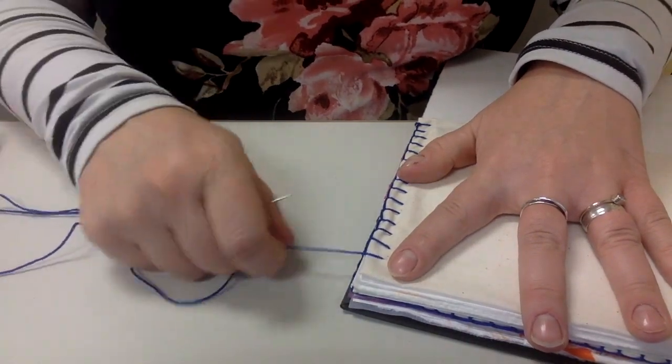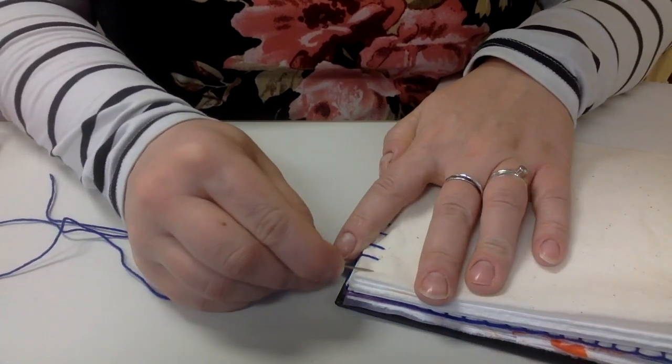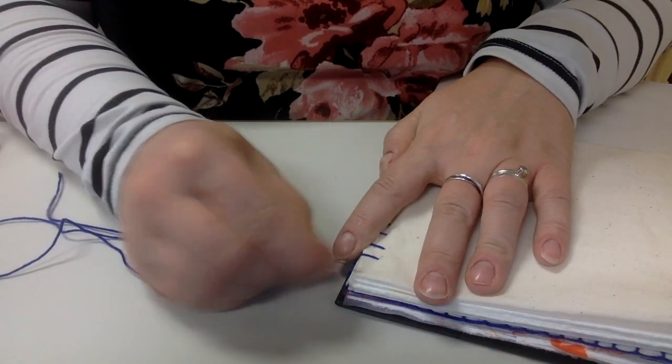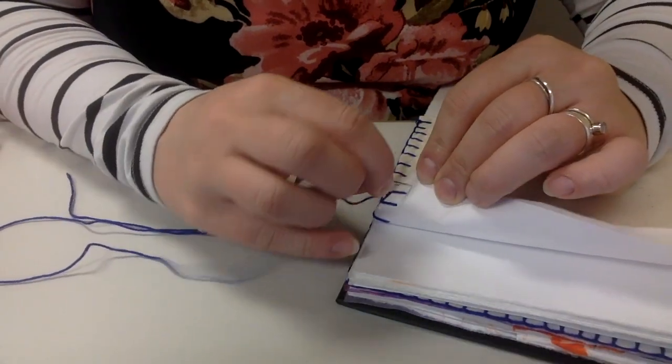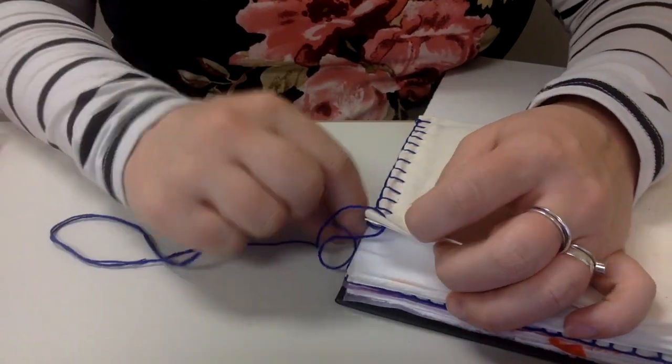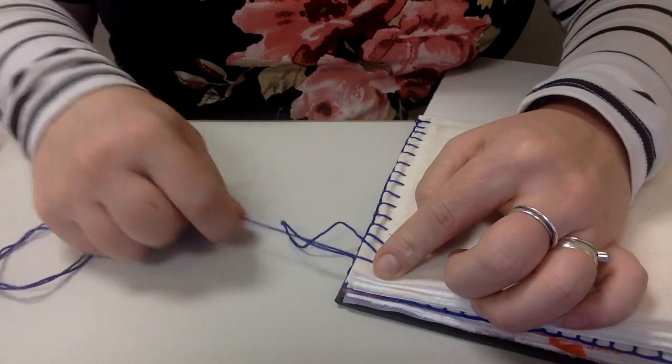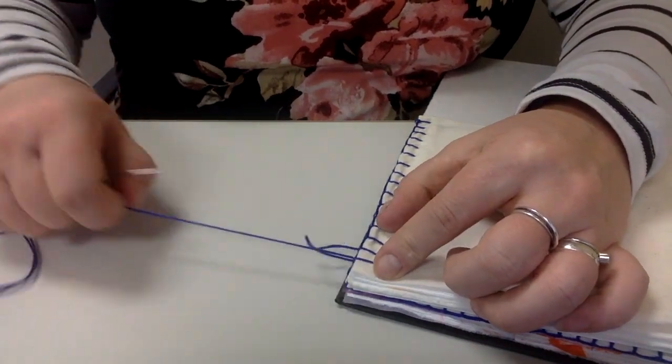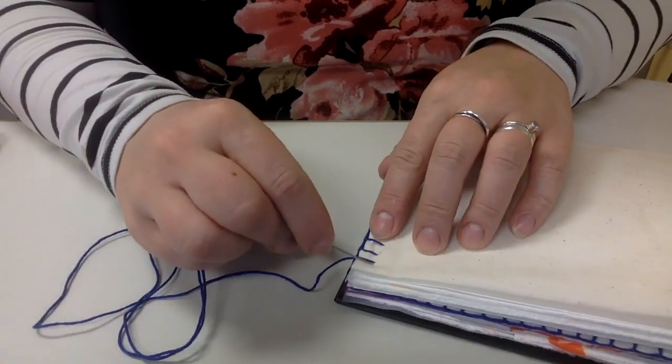Then you're going to continue with your blanket stitch until you get to the actual last stitch on that corner. Here's my second to last stitch, and then this will be my last stitch. With your last stitch, you want to find a point that's equal distance from the side and the bottom of that corner and stitch through there. We're actually going to go through this same hole three times. This is the first time, and the first time we're going to pull down just like we have been doing for our blanket stitch.